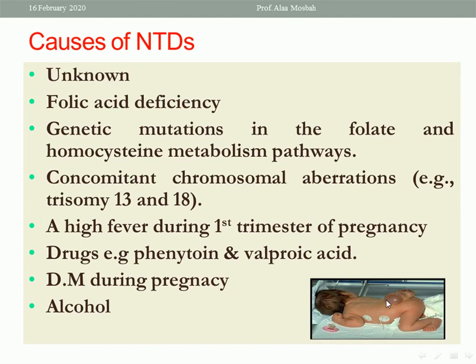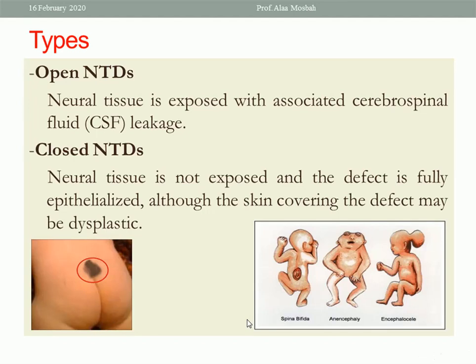As you see in this picture, this is a meningocele. Types of neural tube defect may be open or closed, depending on whether the neural tissue is exposed and cerebrospinal fluid (CSF) leakage is present. If exposed, it is called open; if not, it is called closed. In the closed type, the neural tissue is not exposed and the defect is fully epithelialized, although the skin covering the defect may be dysplastic. An example is spina bifida occulta.